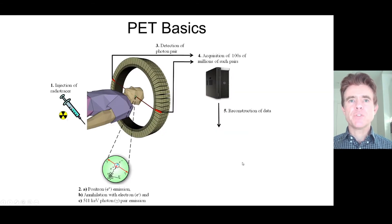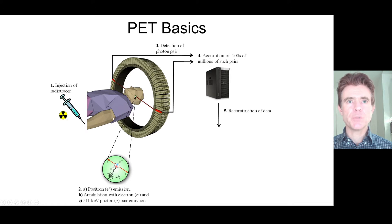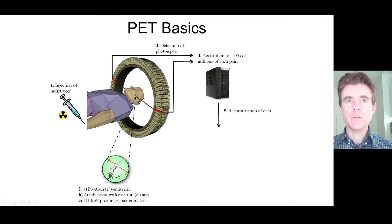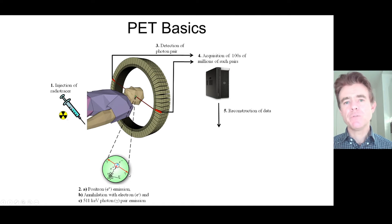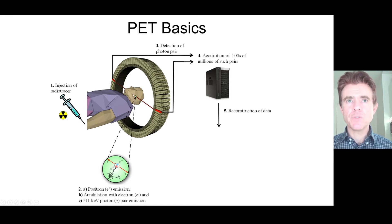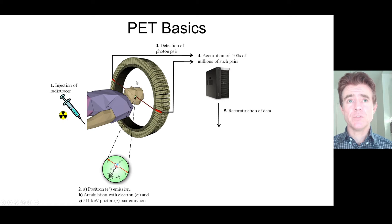The very basics of PET involve administration of a radiotracer to the bloodstream of a patient or subject under study. This gets taken up in various tissues, including the brain. Because this radiotracer is a positron-emitting compound, the positrons emitted will annihilate with electrons, and we get back-to-back high-energy photon pairs, each of 511 keV. These are energetic enough to escape from the brain and be detected in the ring of detectors that constitutes the PET scanner — high-density crystals designed to stop high-energy photons.